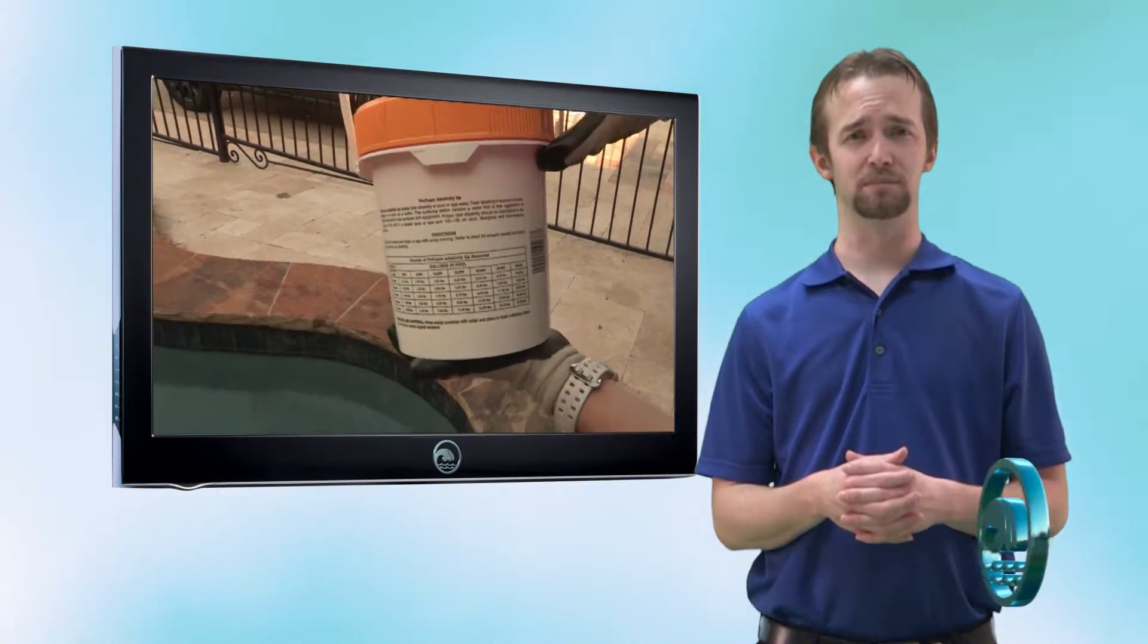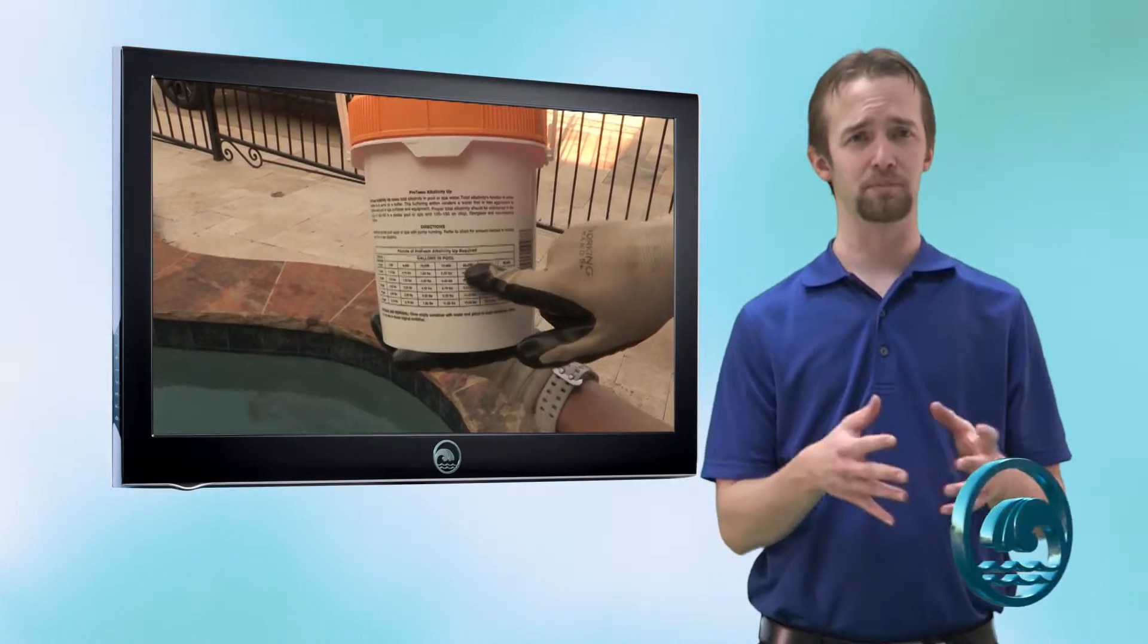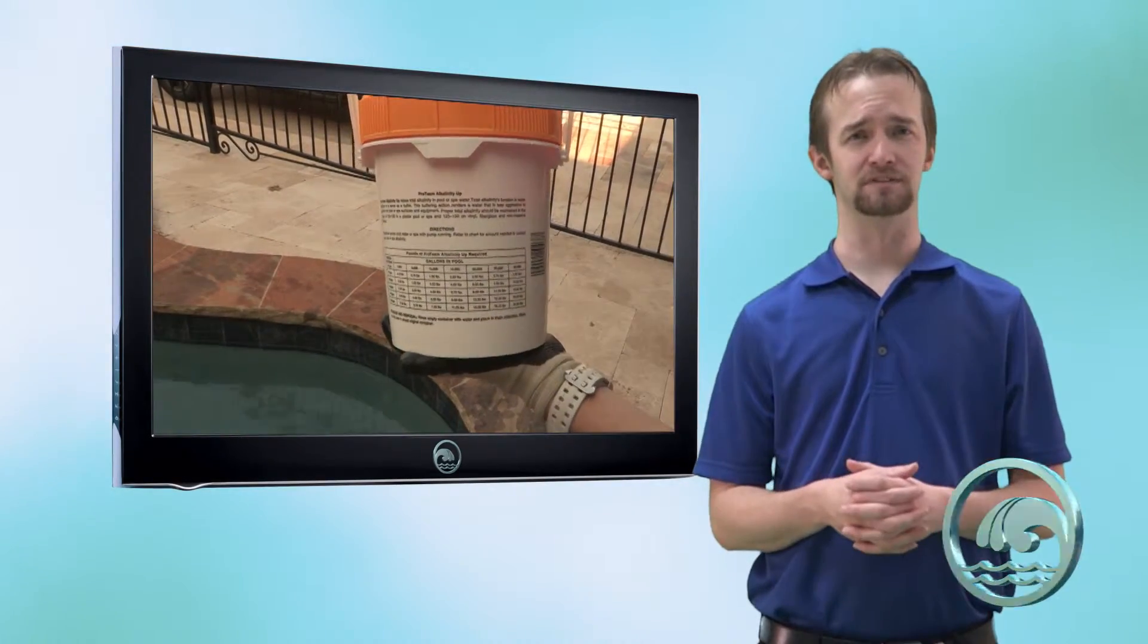Now that I know I need to add 7 pounds of sodium bicarbonate, I simply go, get the proper amount, and broadcast that over the surface of my pool.